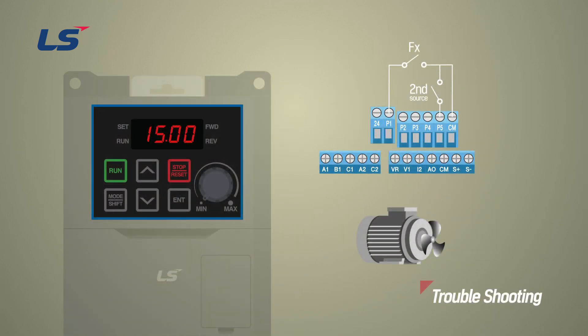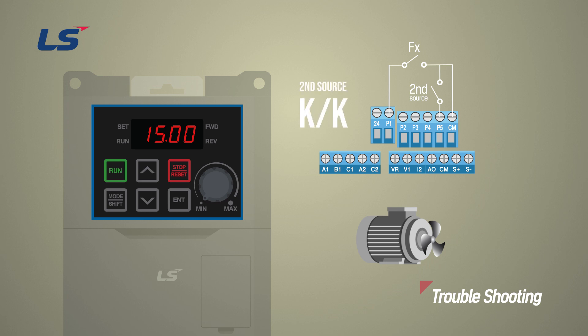The second operation mode allows the user to switch between various command sources such as terminal block operation, keypad, and communication, and frequency reference source to voltage, current, keypad, communication, etc.